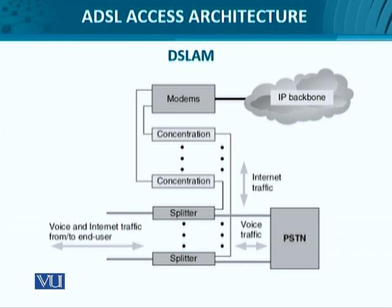Internet traffic goes to the IP backbone. We see modems and concentrators at the central office. When traffic arrives from the user side it is modulated, so at the modem at the central office it gets demodulated. A concentrator is a device that takes traffic streams from all individual users — the internet traffic — and aggregates or consolidates it onto some broadband long-haul multiplexing technology.